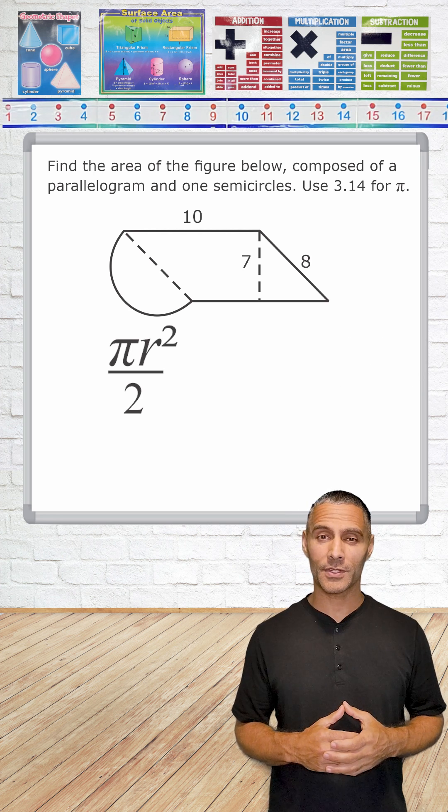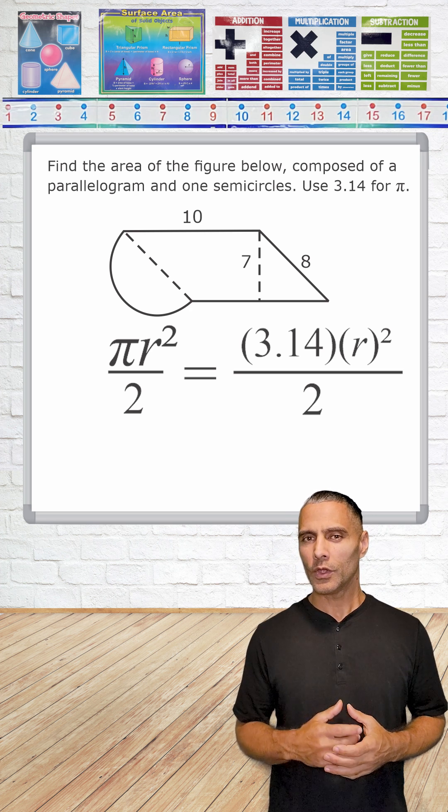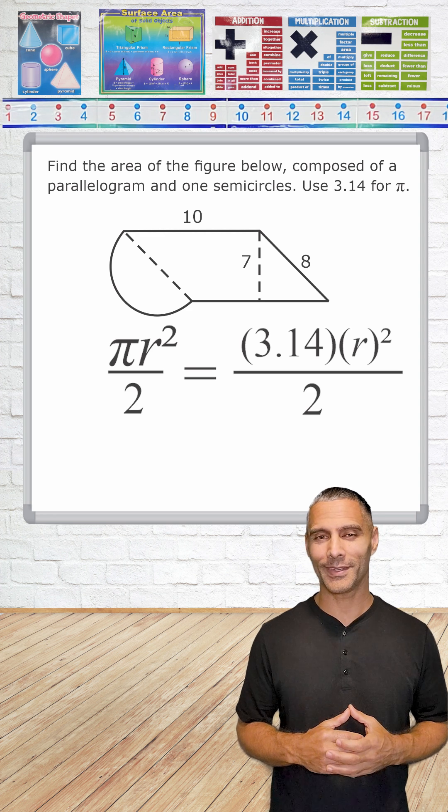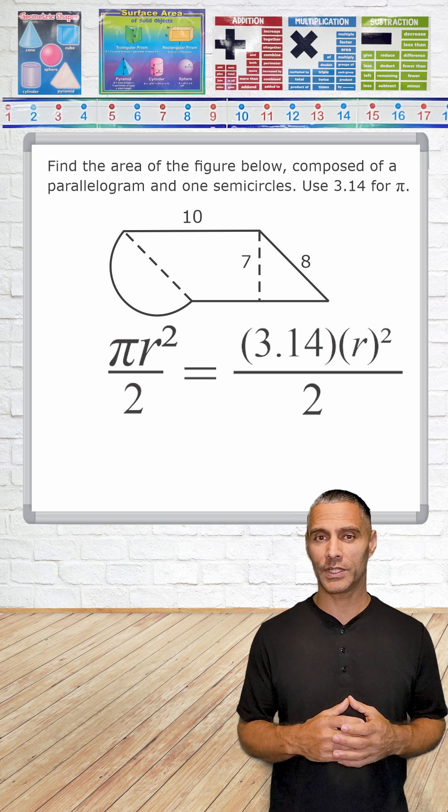We're going to start by substituting pi with 3.14, and then we must determine the radius of our circle. Notice that the radius or the distance halfway across the semicircle is not given, but we do know that opposite sides of any parallelogram are equal to each other.